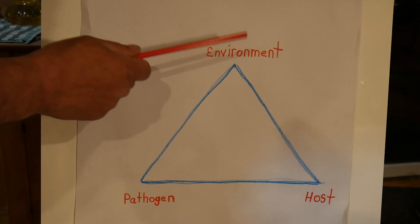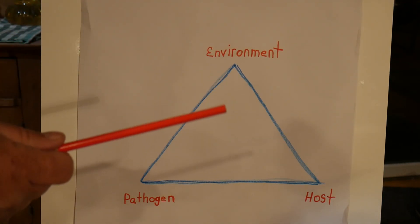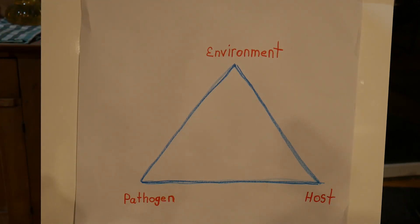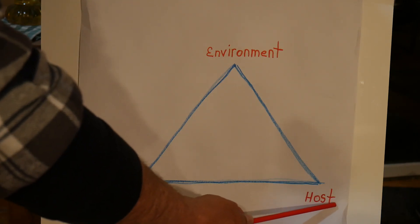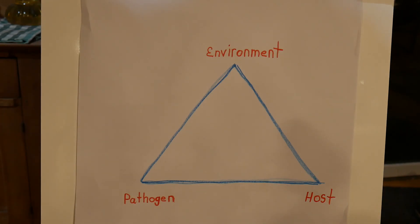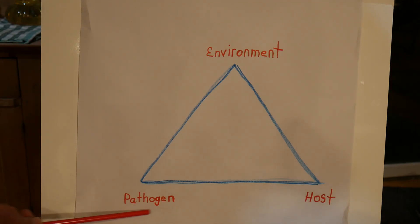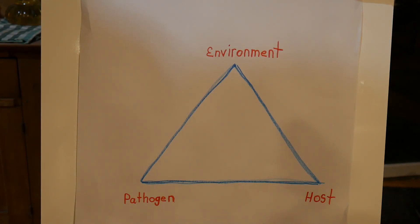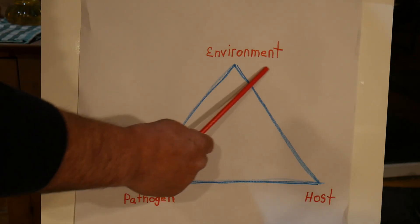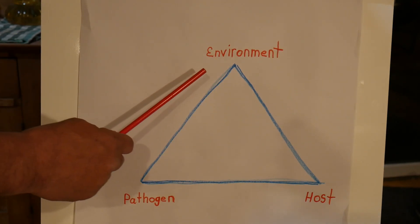These are the three points that any disease needs in order to actually infect your plants — it doesn't matter if you're talking about bacterial infections or fungal infections, and it doesn't matter what kind of plant you're talking about. The first point is the host. You need the host plant. For example, if you don't have any apple trees, you don't have to worry about apple scab. The second point is the pathogen. You actually have to have the pathogen somewhere in the environment in order to infect your trees.